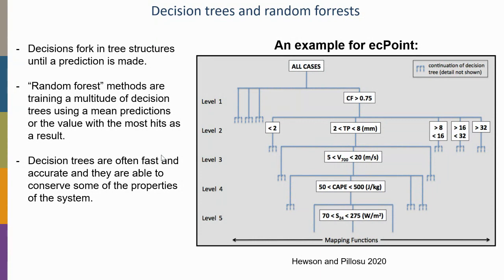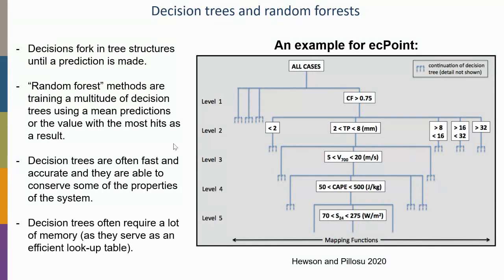Decision trees are often fast and accurate and can conserve properties of the system. Unlike neural networks, where it's difficult to enforce conservation laws like mass conservation in fluid dynamics, decision trees are more transparent because you know what each decision is doing. However, they require a lot of memory in HPC systems, which makes them somewhat clunky for high-performance computing applications.